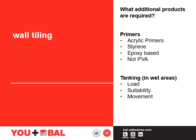When wall tiling we need some additional products as well as those for floor tiling. Looking at primers, we have different types: acrylic, styrene and epoxy based. The most important factor is do not use PVA — this is no longer recommended as it is soluble and potentially water sensitive. Tanking in wet areas is required just as with the floor. We need to protect the background and stop any water migration into the fabric of the building.